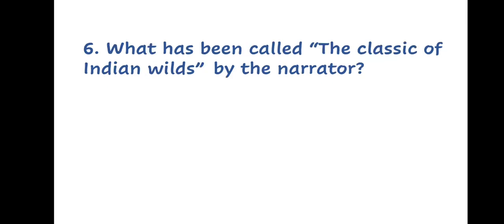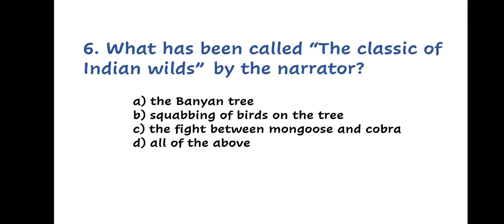Question 6. What has been called the classic of Indian vials by the narrator? A. The Banyan Tree, B. Squabbling of birds on the tree, C. The fight between mongoose and cobra, or D. All of the above.